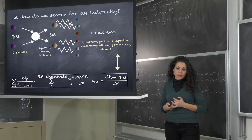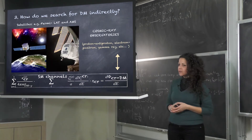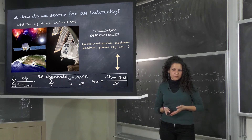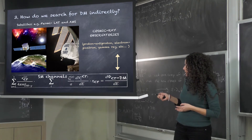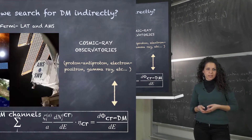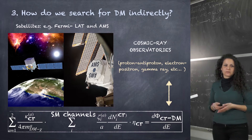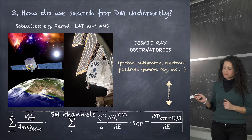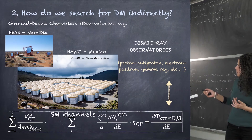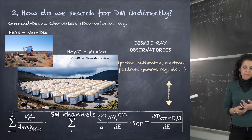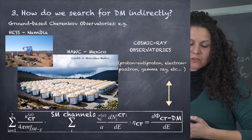How do we detect cosmic rays from the universe? We do that via experiments. We have different kinds of experiments. We have satellite experiments — for example, Fermi-LAT and AMS — that are able to detect cosmic rays such as gamma rays, protons, antiprotons, electrons, positrons, and so on. Then we have ground-based experiments, for example the Cherenkov telescope H.E.S.S. in Namibia and HAWC, a water Cherenkov telescope in Mexico.